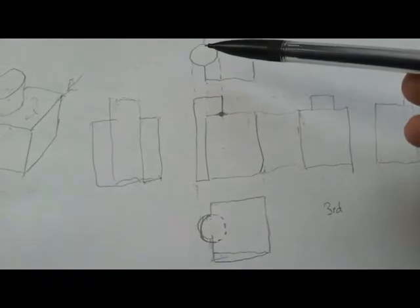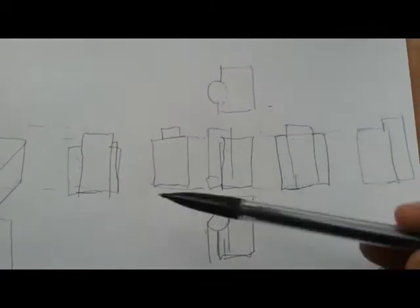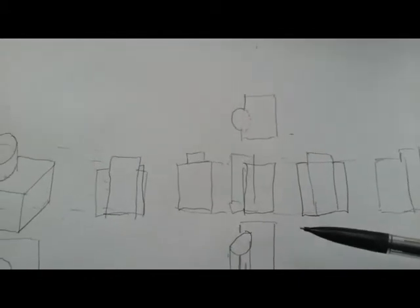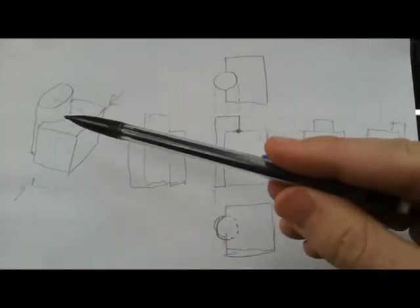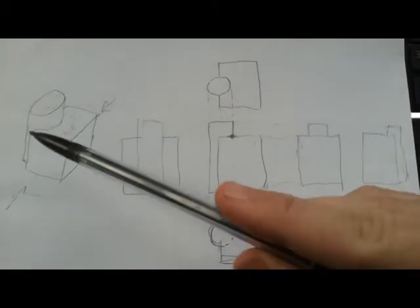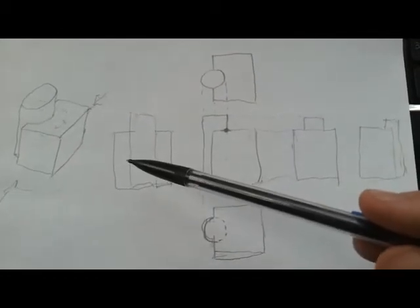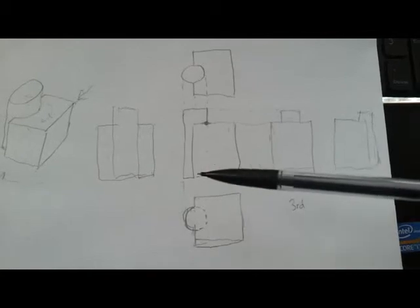So the top view in third-angle is the bottom view in first-angle, so they just flip around. Common sense tends to dictate that if you look at something from the right, you draw it to the right. And if you look at something from the left, you draw it to the left. That's, I think, why this view has started to take priority in many places.